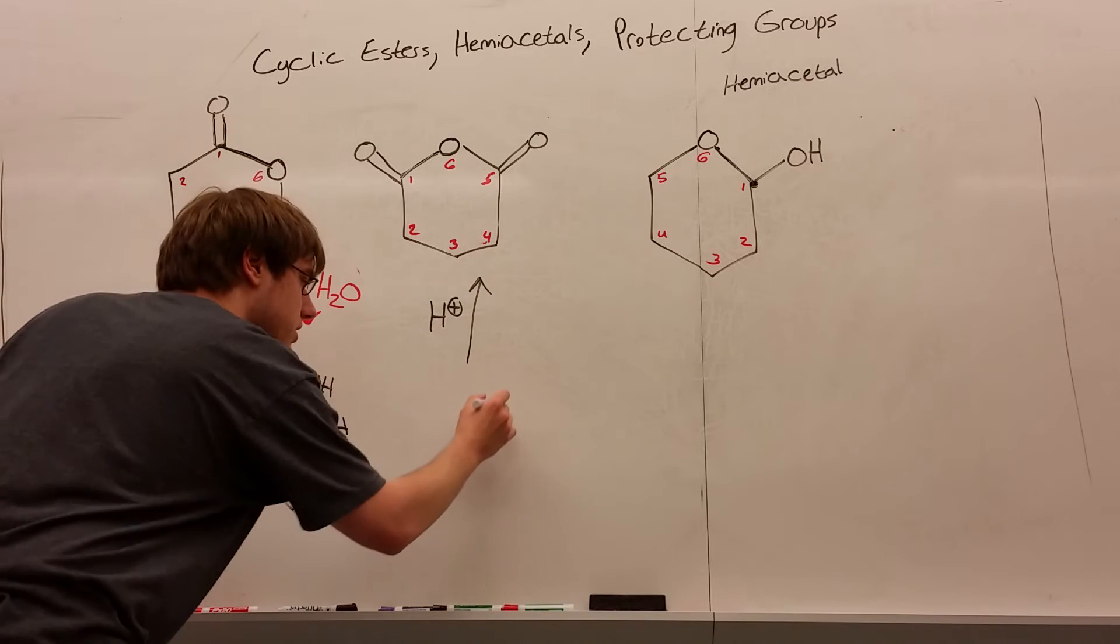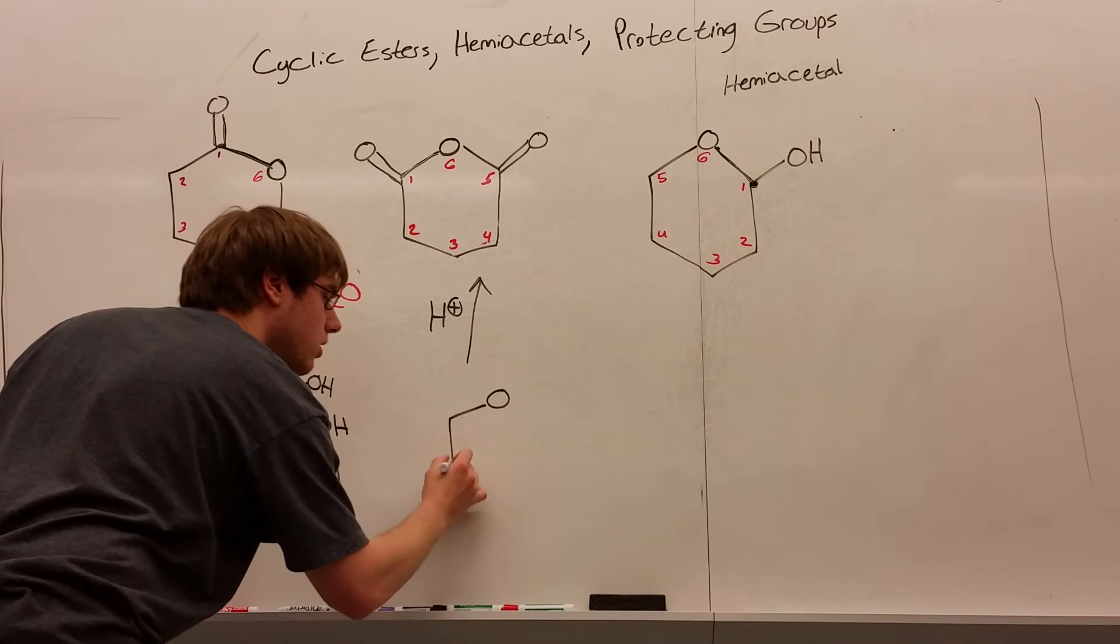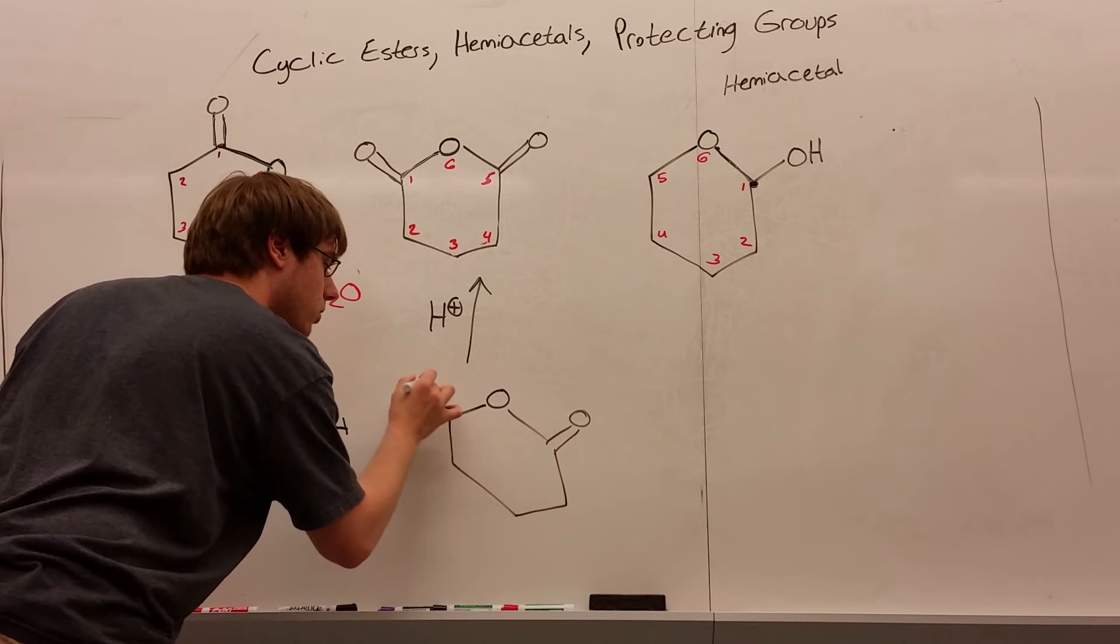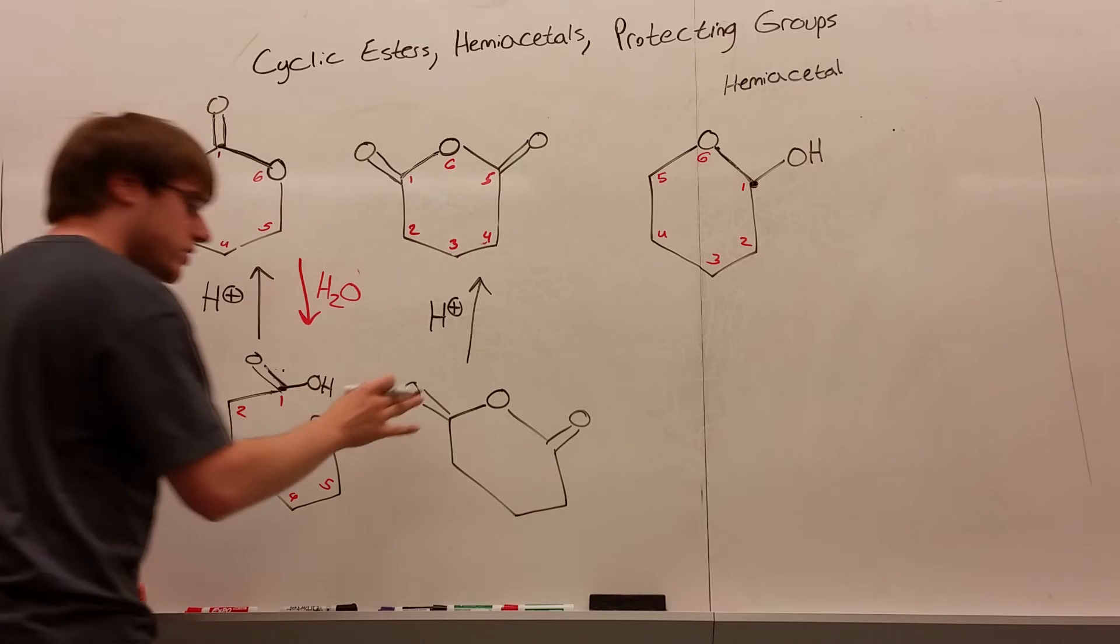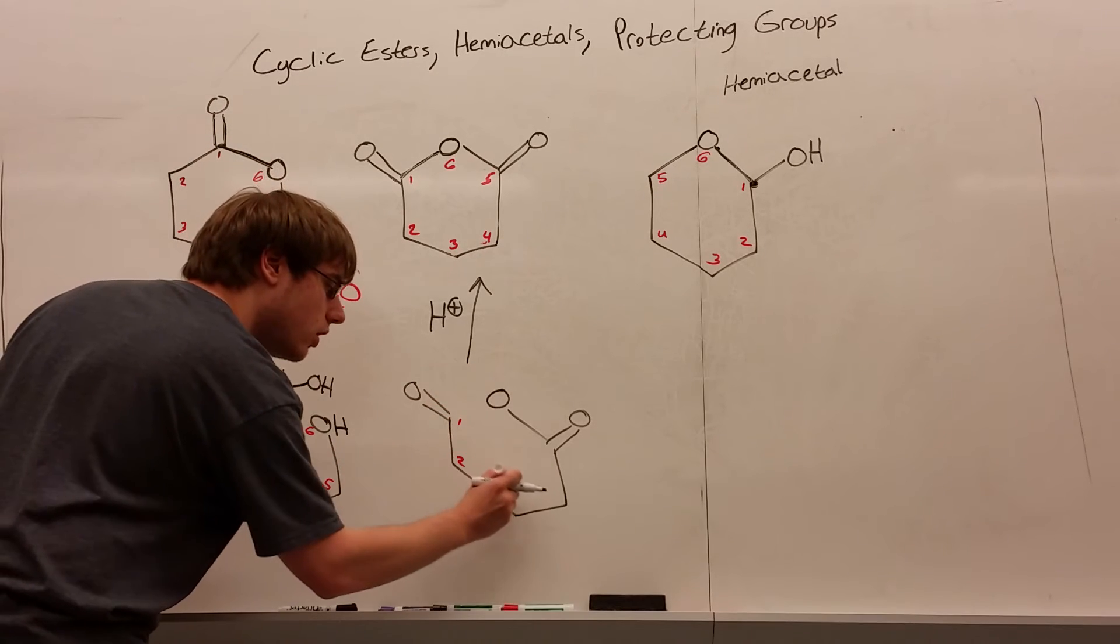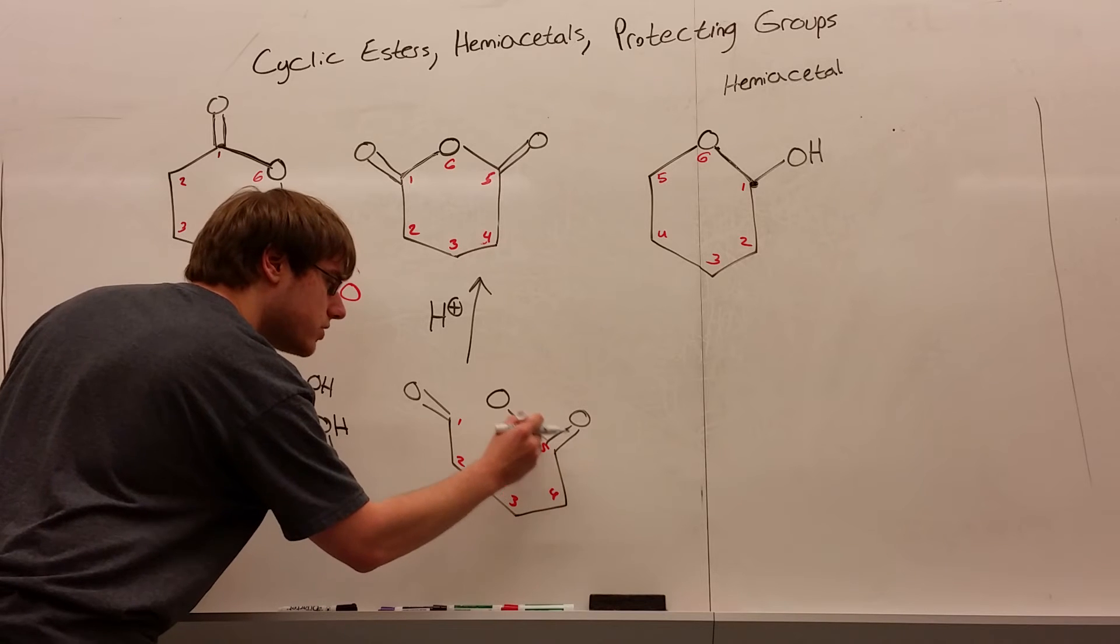I'm going to redraw everything exactly the same. So oxygen, double bond O, double bond O. I'm going to erase the bond that I chose, so the bond between one and six. So one, two, three, four, five, six.